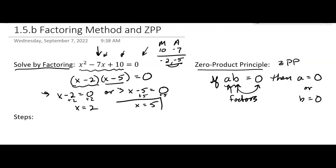So there are two solutions to this equation, and the solutions are 2 and 5. So now I'm going to give you the steps for solving by factoring.